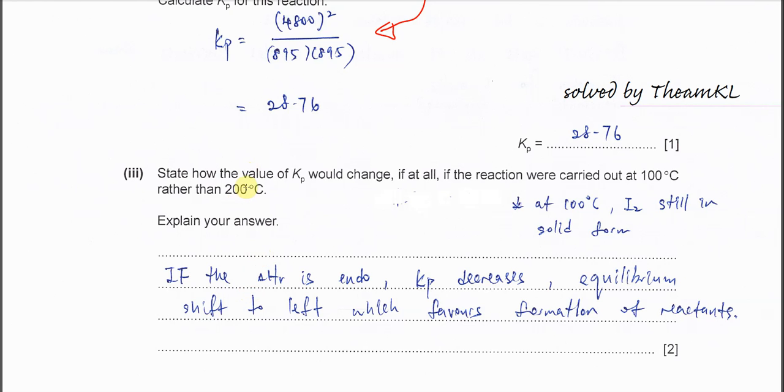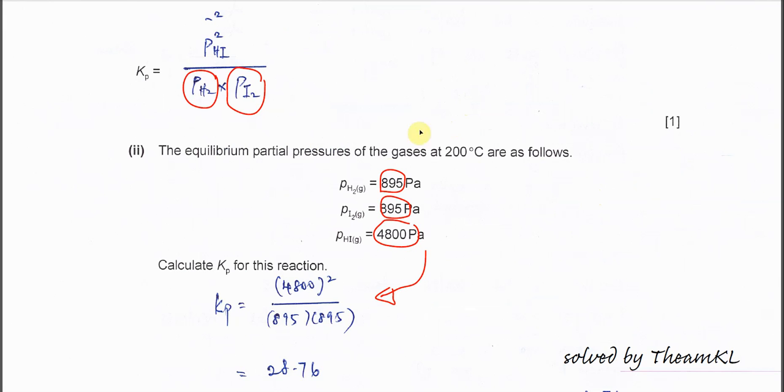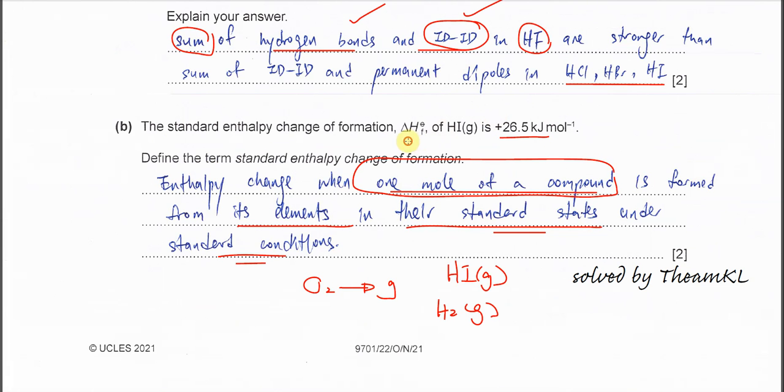For part 3, actually this question is a bit problematic. Because at 100 degrees C, the iodine still not really melts. The melting point of iodine is actually 110 something. So at 100 degrees C, the iodine is not really in gas form. That's the main problem, which means it's hard to compare with the equilibrium statement here. We are not really sure whether it still follows this one.